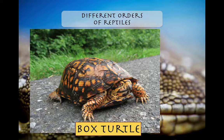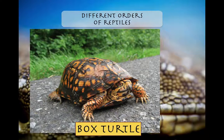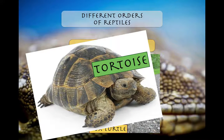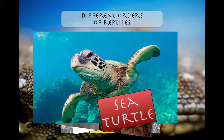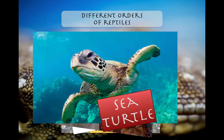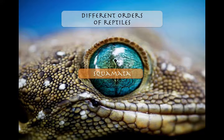What you're seeing here is a box turtle, a tortoise, snapping turtle, and sea turtles that live in the water. That's your Chelonia.